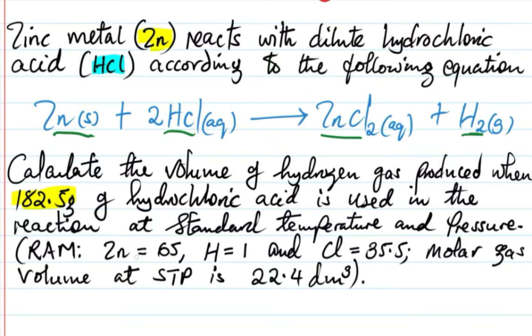I've been given that zinc RAM is 65, hydrogen is 1, and chlorine is 35.5. The molar gas volume at standard temperature and pressure is 22.4 dm³.